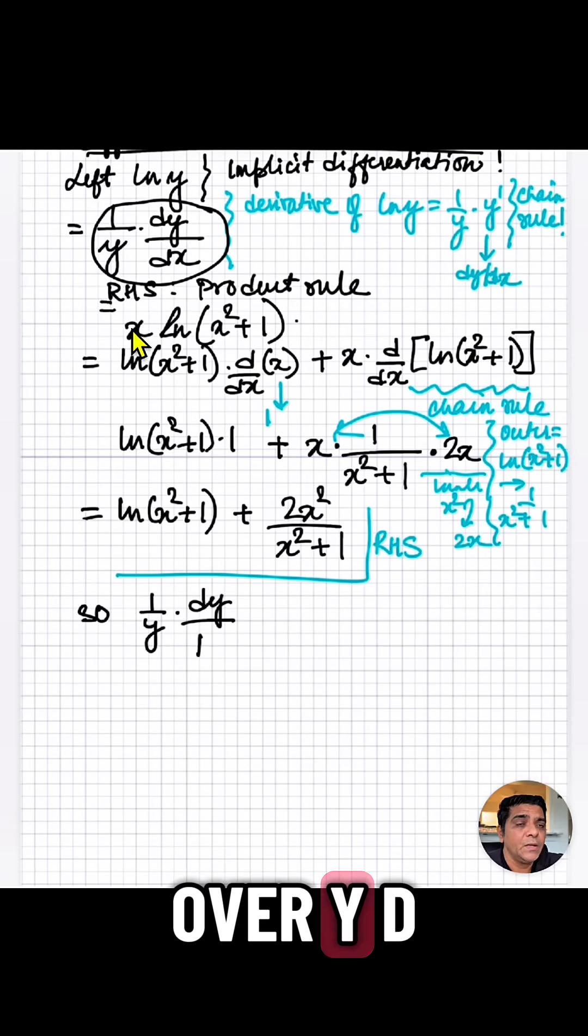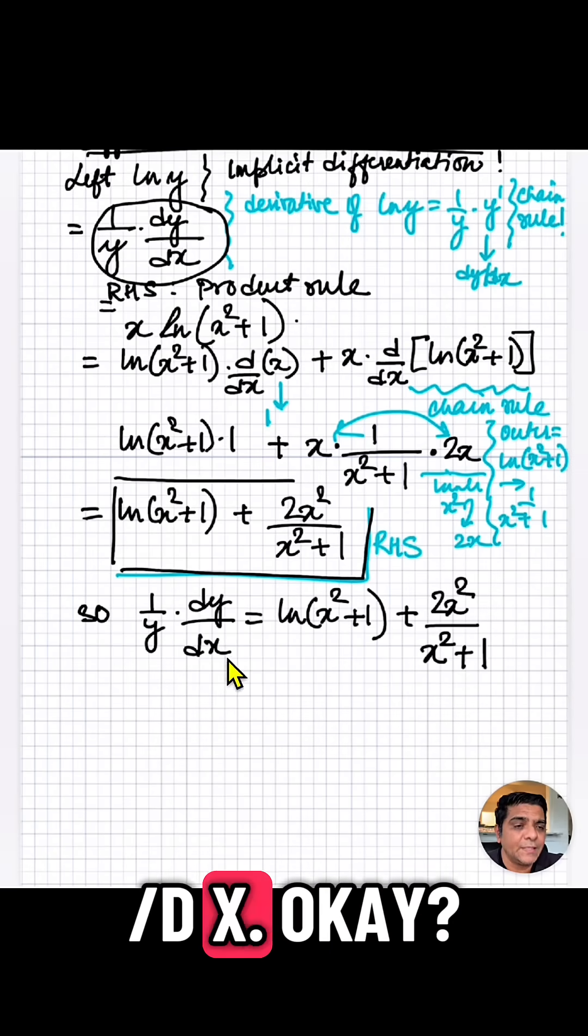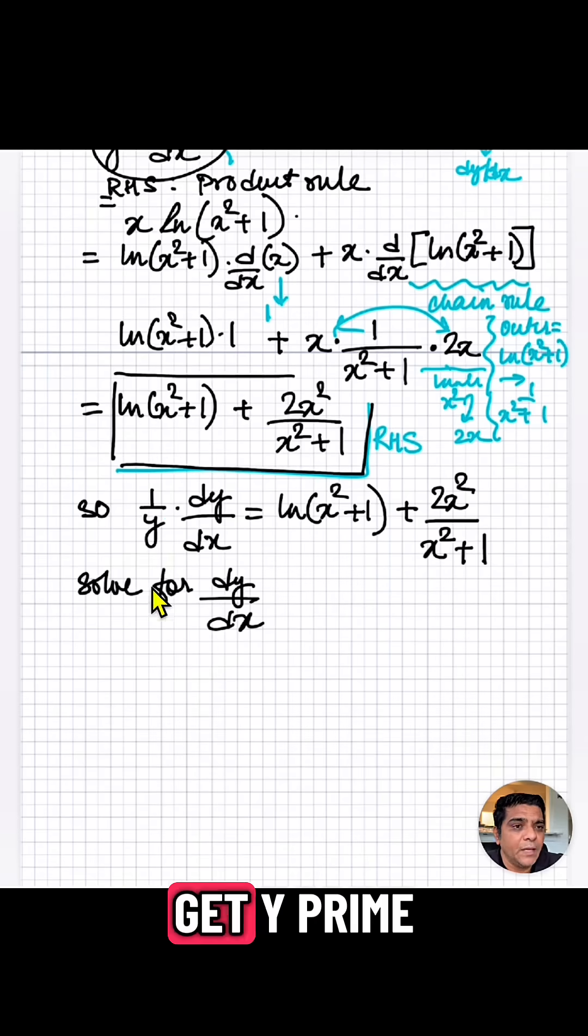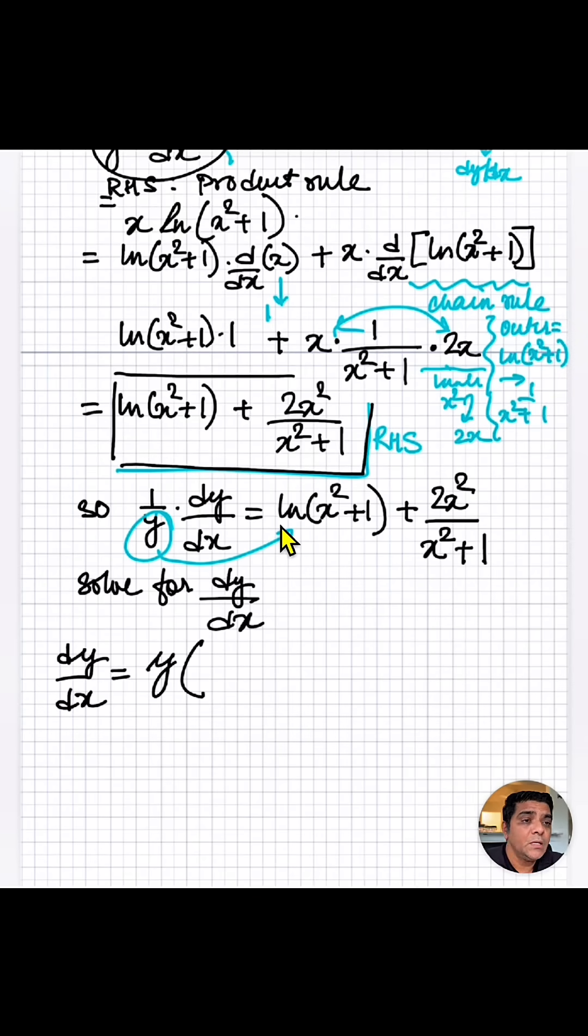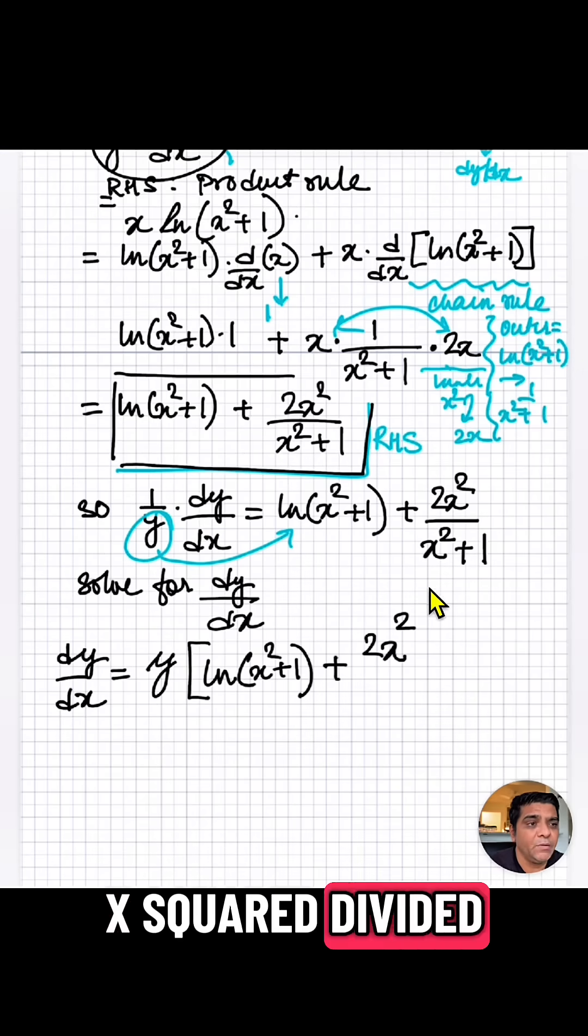On the left, we have 1 over y dy dx. So now what we're going to do is we want to solve for dy dx to get y prime. So y can be brought over to the other side and cross multiply. And then we're going to write the rest of it ln x squared plus 1 plus 2x squared divided by x squared plus 1.